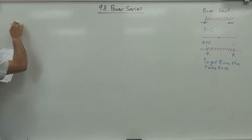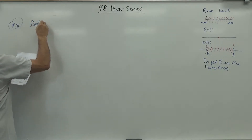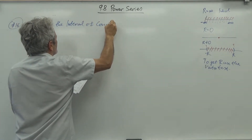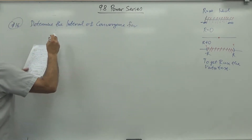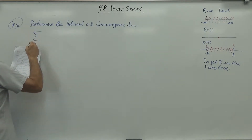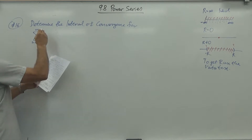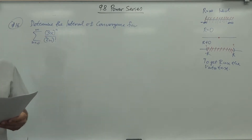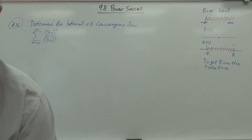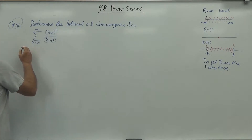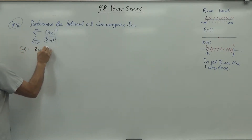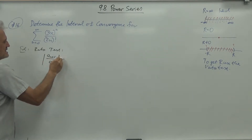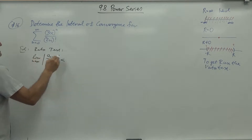Problem number 16: determine the interval of convergence for the sum from n=0 to infinity of (3x)^n over (2n) factorial.